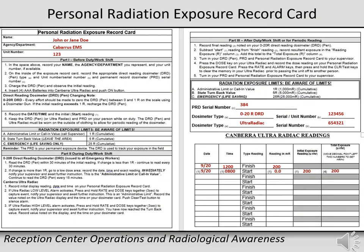The personal radiation exposure record card is used to document all radiological items given to you for your response, including the direct reading or UltraRadiac dosimeter, permanent record dosimeter, and potassium iodide tablets. This card has reminders of your exposure limits and KI use. If dressed out in protective clothing, this card remains with your group leader in a clean area. You will be asked to read your dosimeter every 15 to 30 minutes to verify your exposure.